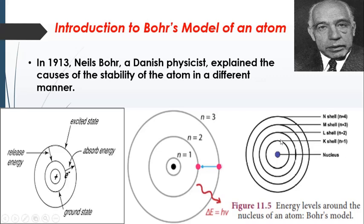When an electron is present in the K shell, it is at the lowest energy — the ground state. When electrons revolve around the nucleus in these orbits, they neither lose energy nor gain energy. As long as the electron revolves in the same orbit or shell, it neither loses nor gains energy. Only if it lost energy would it fall into the nucleus. This is one of the key postulates of Bohr's theory.